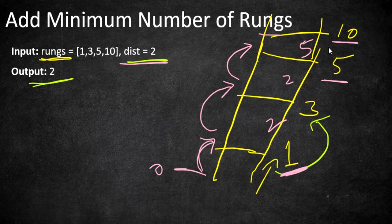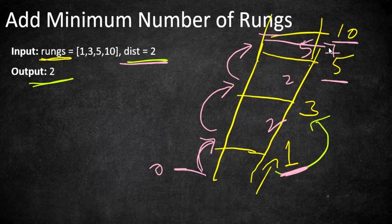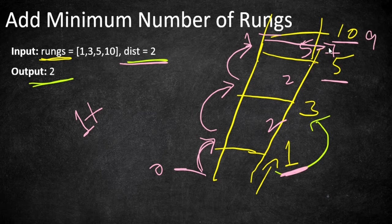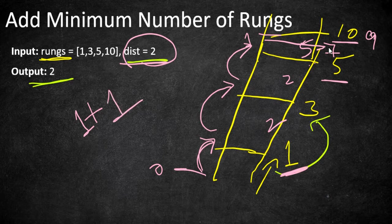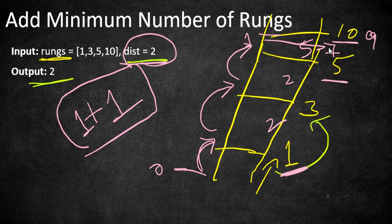We need to calculate how many rungs we need to add between positions 5 and 10. The distance is 5 and we can climb at most 2 at a time. If we add a rung at position 7, that helps us climb to the next step. From 7, the farthest we can reach is 9. From 9, we need one more rung to reach 10. So in total, we need 2 rungs added between positions 5 and 10 — that is the output.